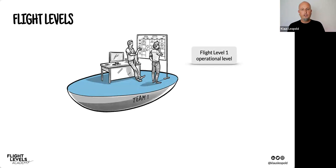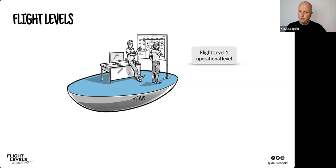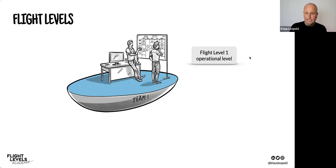We can fly very low in organizations and see all the details — what our people are currently working on. This is Flight Level One: the operational level, where teams do the actual operational work. These teams incorporate the five activities: they build a board to visualize the situation, create focus, establish agile interactions, measure progress, and improve. Usually an organization has more than one team, so we see multiple FL1 systems.